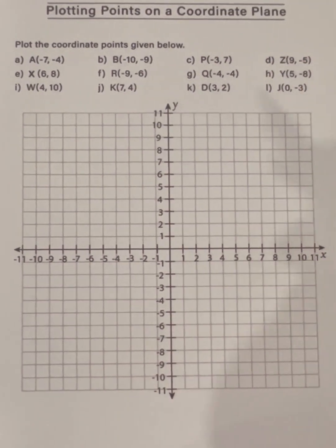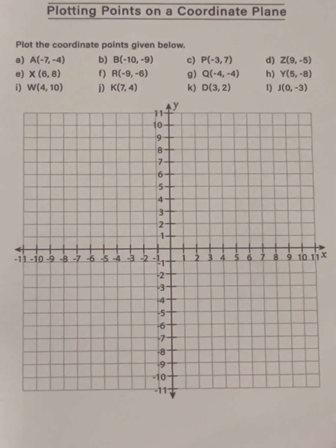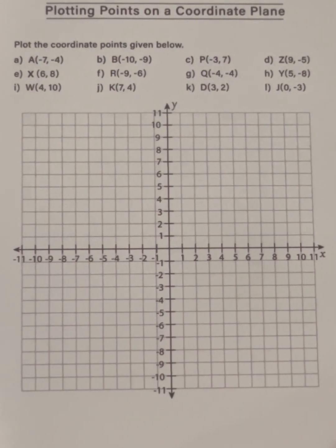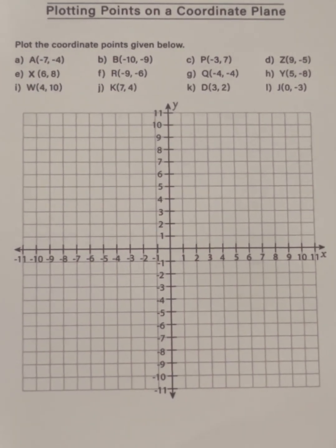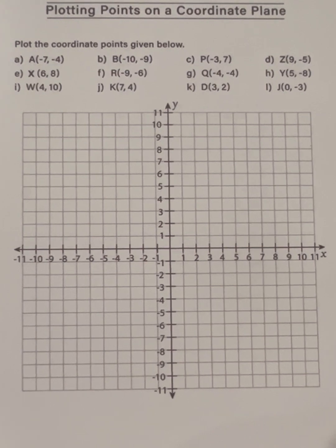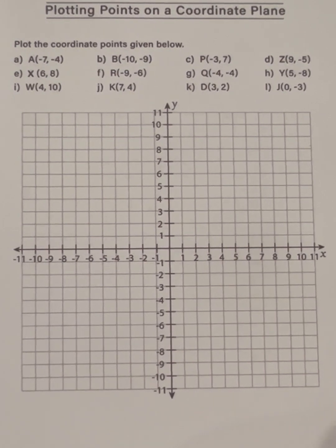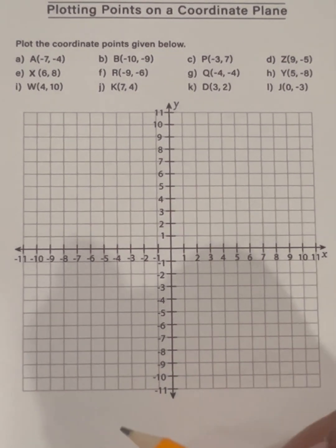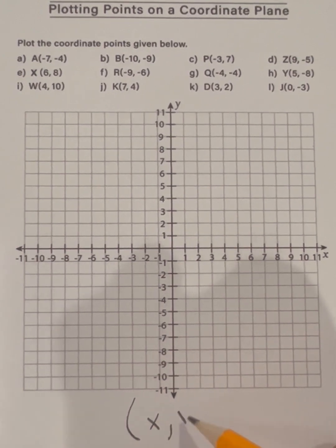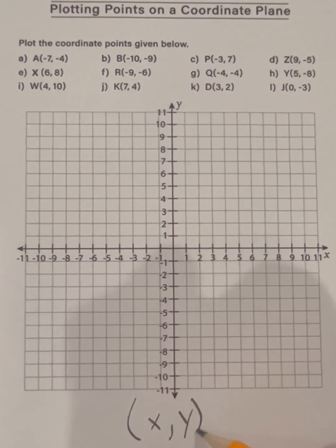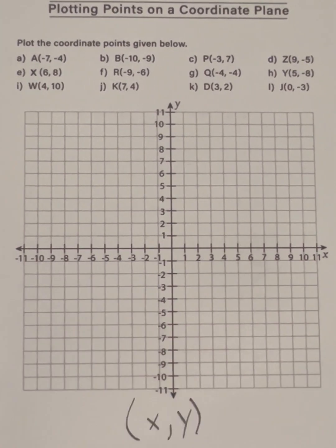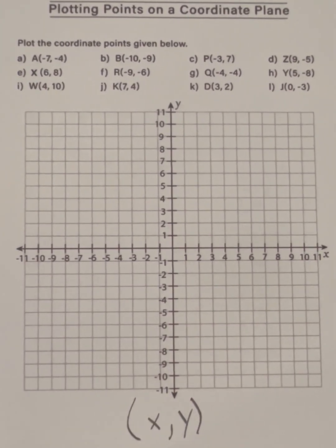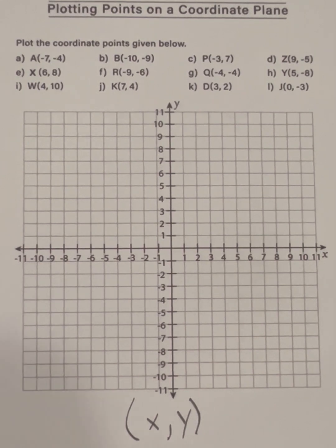which is called the origin. The origin is always zero, zero. So when we get ready to plot on the coordinate plane, we have to have something called ordered pairs. Every ordered pair has an x and a y. The x always comes first, the y comes second.